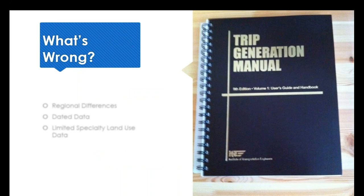We start with a picture of the ITE Trip Generation Manual. This is the standard guide used across the nation — the go-to document everyone uses when trying to figure out what traffic a development will generate. It's common, it's standard, and anyone in the industry knows this is where you typically start. But we do have some issues with it.